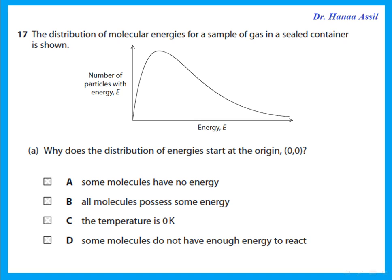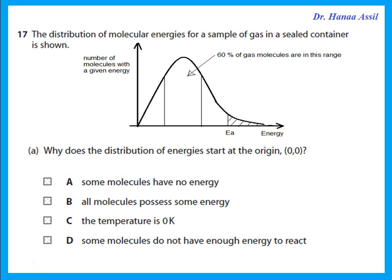Question 17: the distribution of molecular energies for a sample of gas is shown — a Maxwell-Boltzmann distribution. Why does the distribution start at (0,0)? This graph shows the number of particles with a specific energy. The number of particles with zero energy is none — no molecule has zero energy. All particles have some energy, and most have around the intermediate energy, so the graph must start from zero.